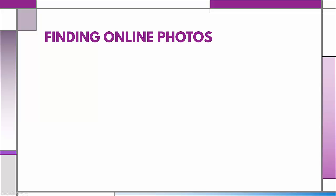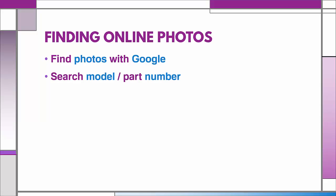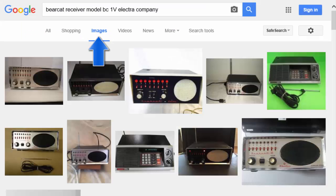Even without a camera, you're still in luck. You can still find product photos, and the best place to start is with Google. So let's get searching. Ideally, you'll have some kind of a product name or model number to search on. Enter it into Google and select the Image tab.